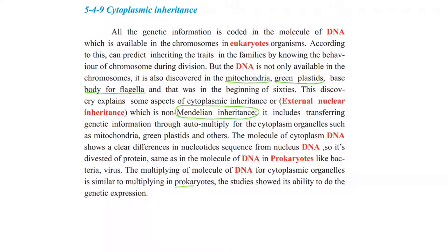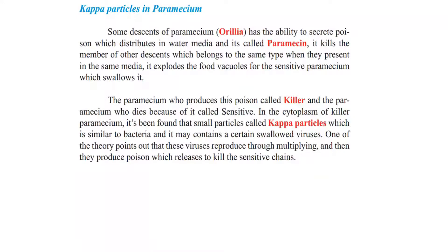The multiplication of the DNA molecule of cytoplasmic organelles is similar to multiplication in prokaryotes — so how genetic material in prokaryotic organisms multiplies is similar to how it multiplies in mitochondria or chloroplasts. Studies show this ability is due to genetic expression. An example for cytoplasmic inheritance is kappa particles in Paramecium.